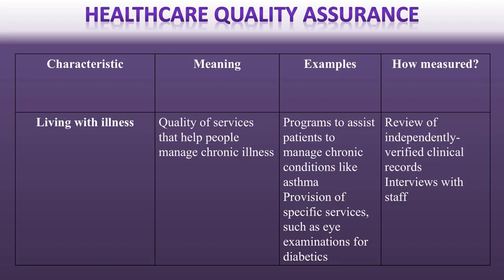A lot of people have illnesses that will be chronic. A very large portion of the US population, regardless of age, has chronic conditions they have to continuously deal with. A good healthcare system has systems in place to help those people — monitoring their healthcare conditions, helping them receive the services they need, and making sure those chronic conditions don't progress to be worse. Here we can look at things like records and staff experiences with providing those services.